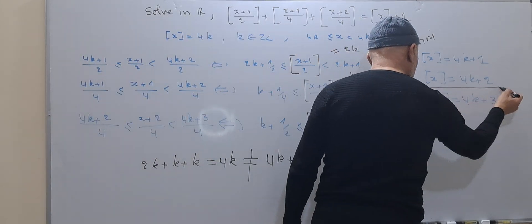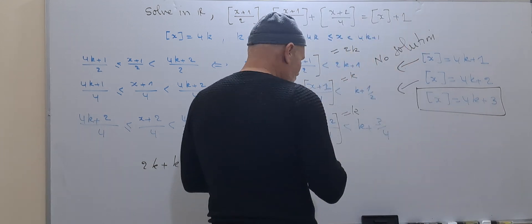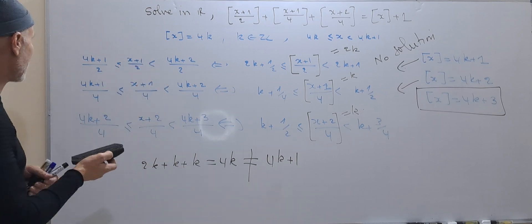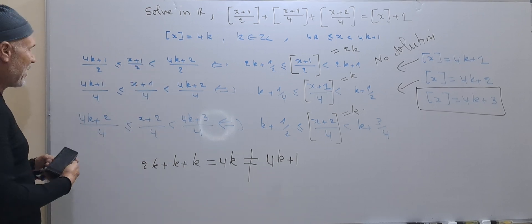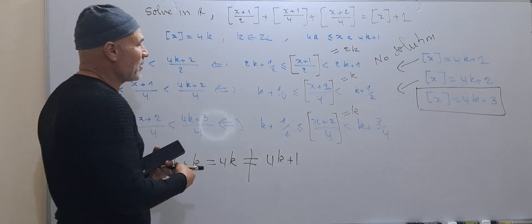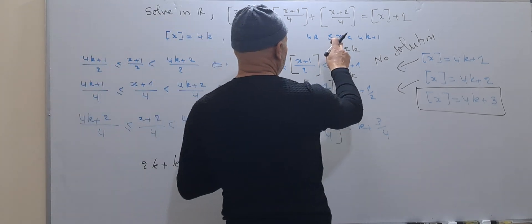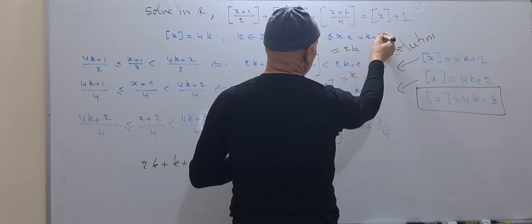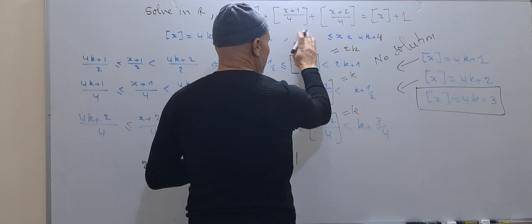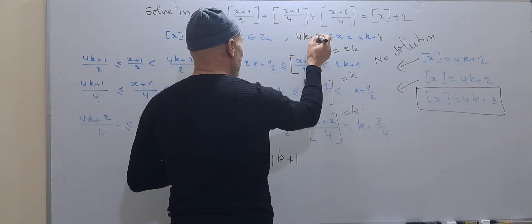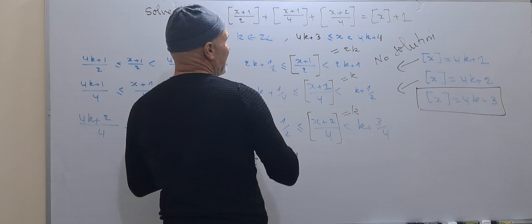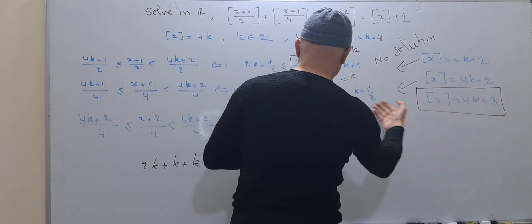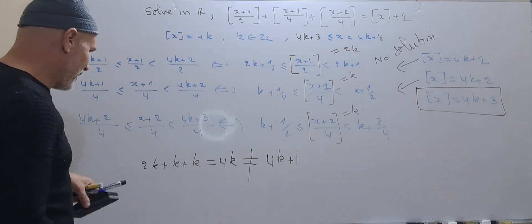For the last case — floor(x) = 4k+3 — we will get a solution. Let us try just this one. This means that x is between 4k+3 and 4k+4. We will repeat this equation as we did before, and we will get equality.